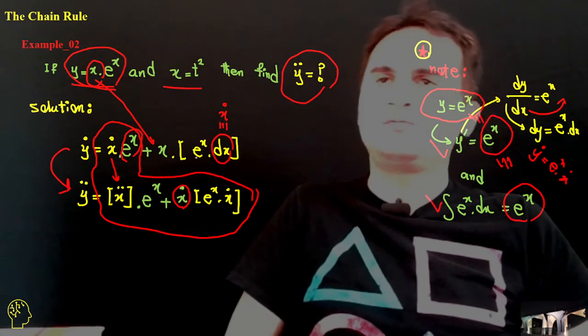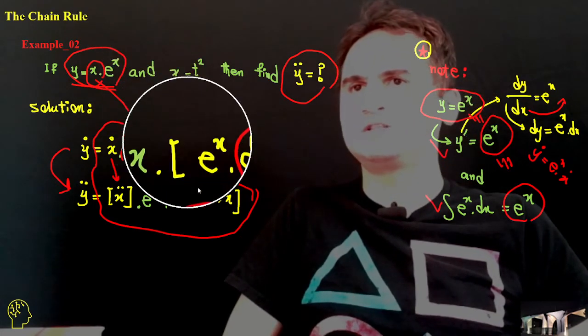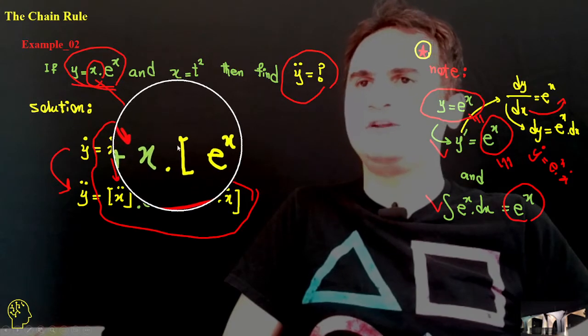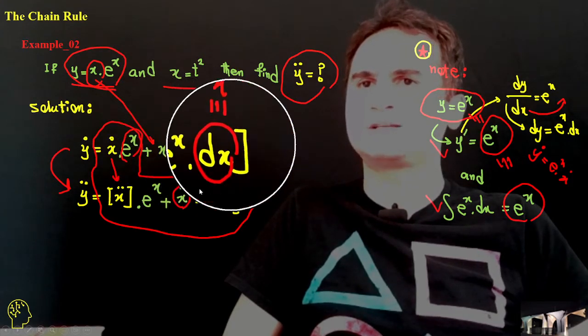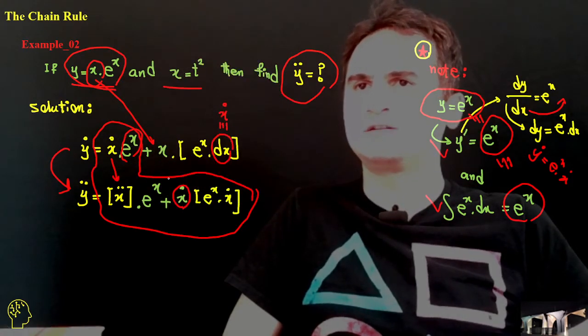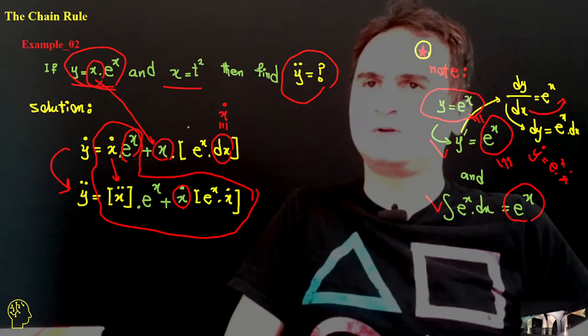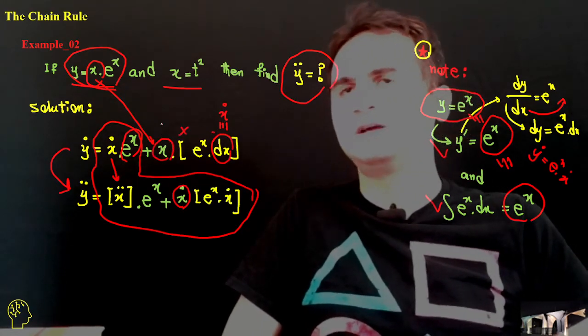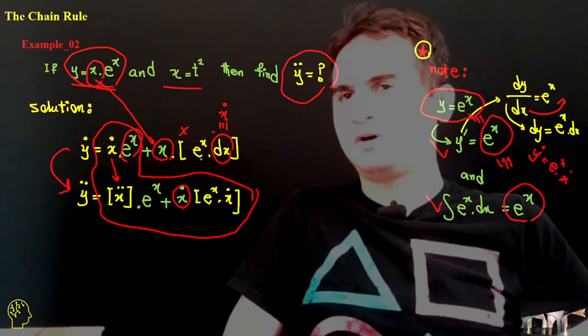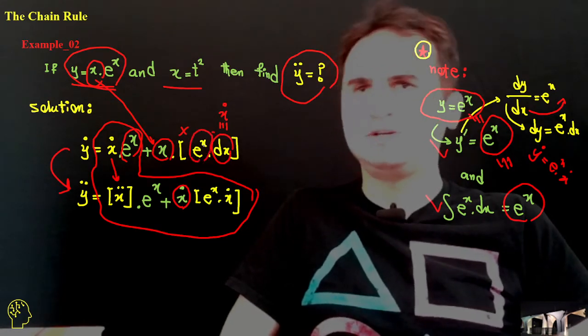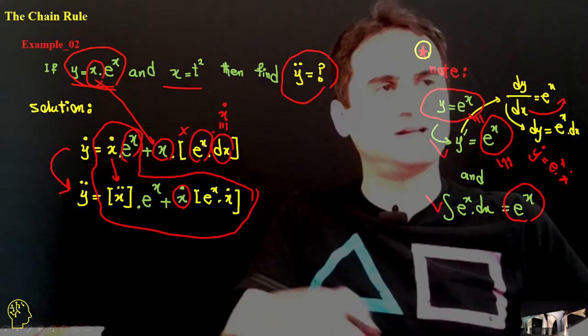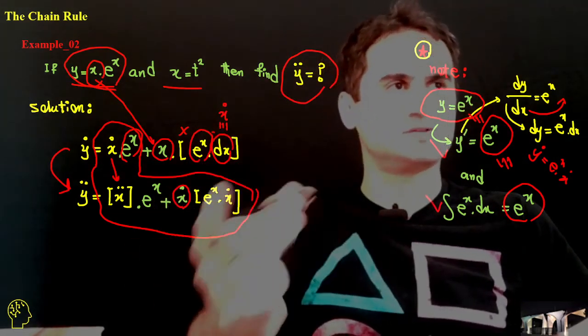And then we move to the second part, which is this part. You can easily see we have three terms: x, e to the x, and dx which is x dot. So if we just make derivation of the first part and multiply by the two others like a constant, and like the second part, consider e to the x, the derivation of that one multiply by the two others like constant, and move on.